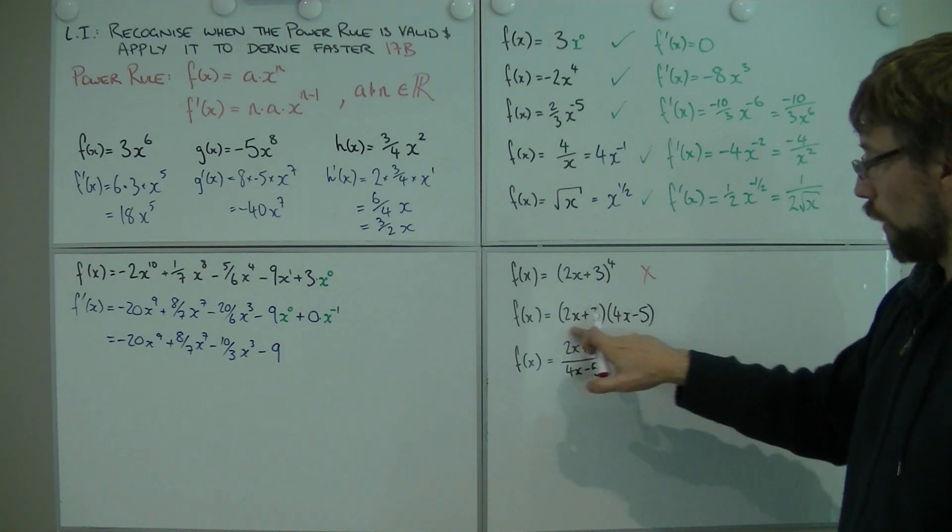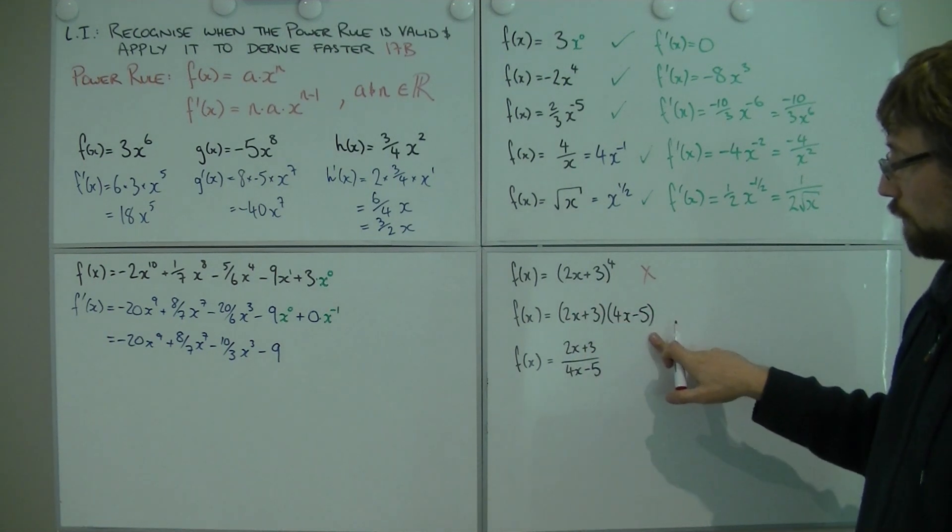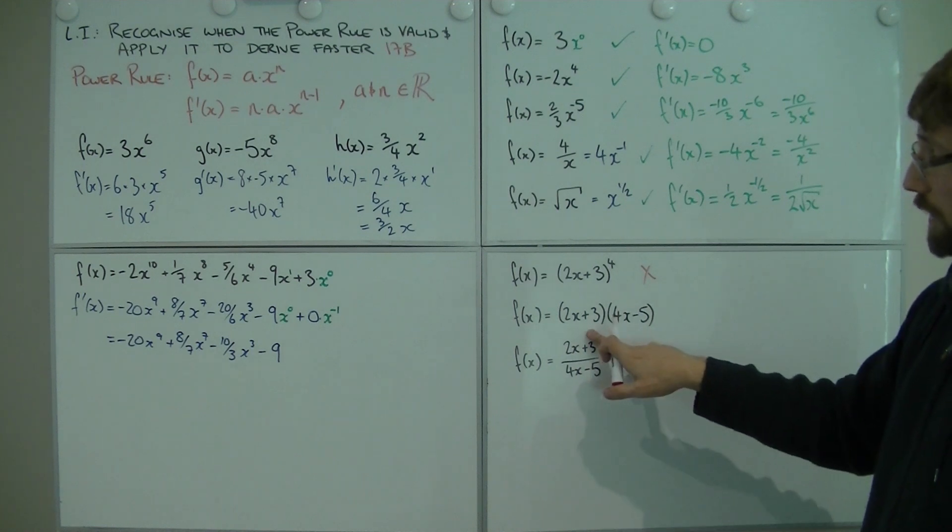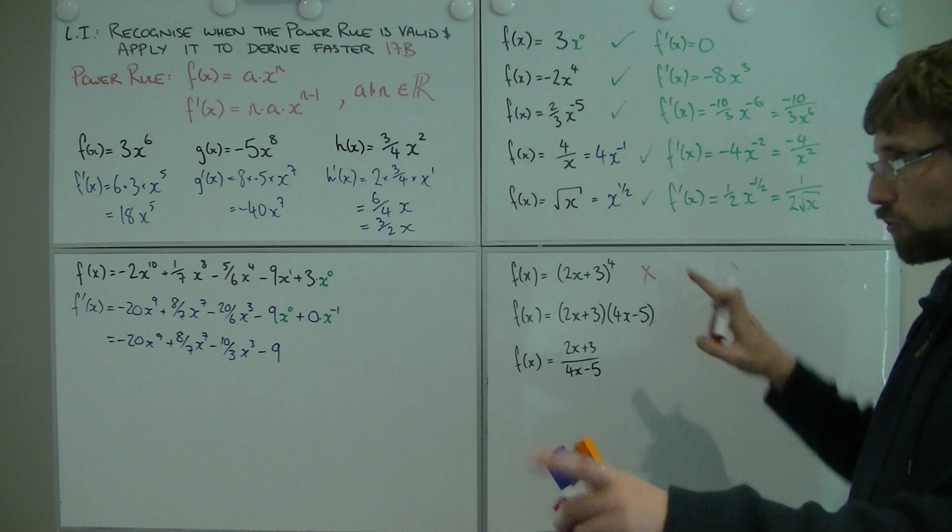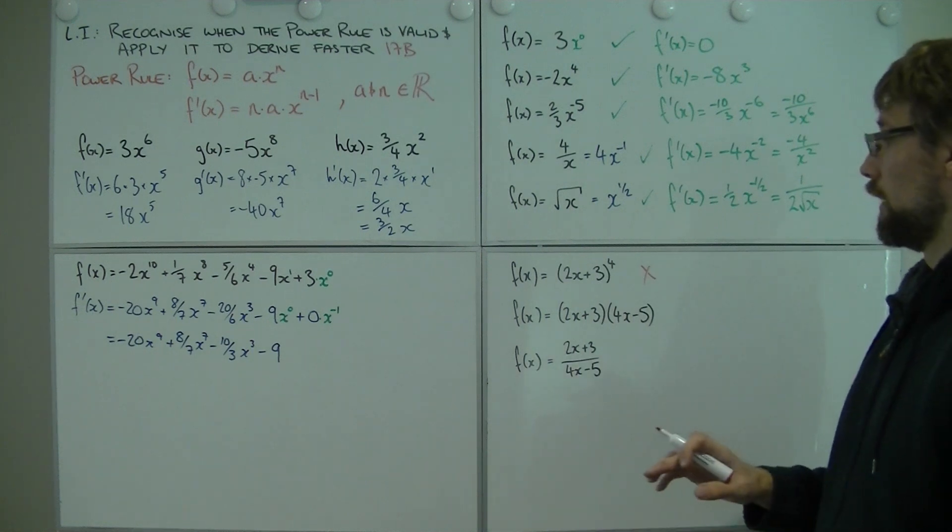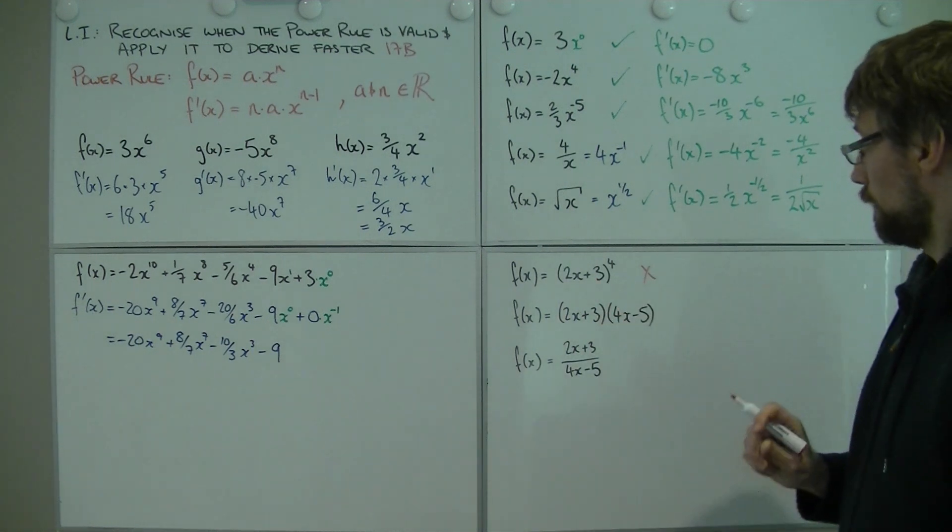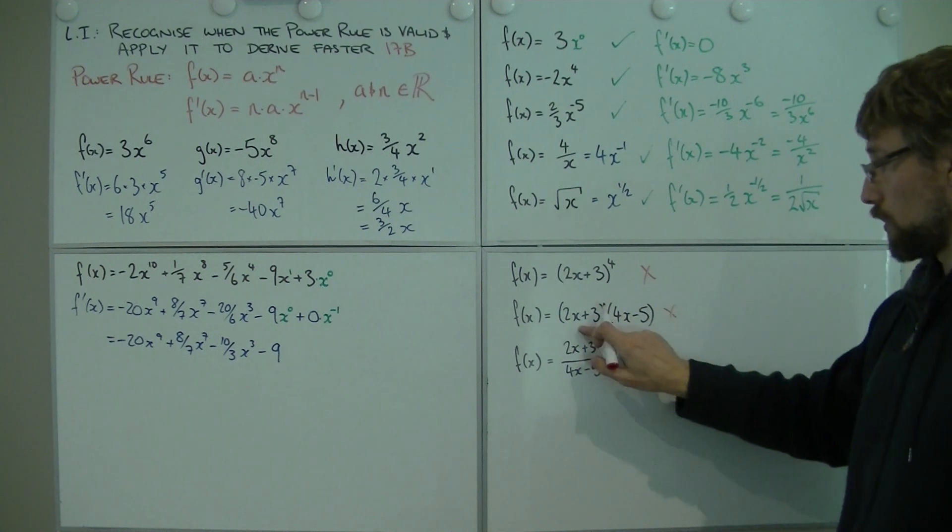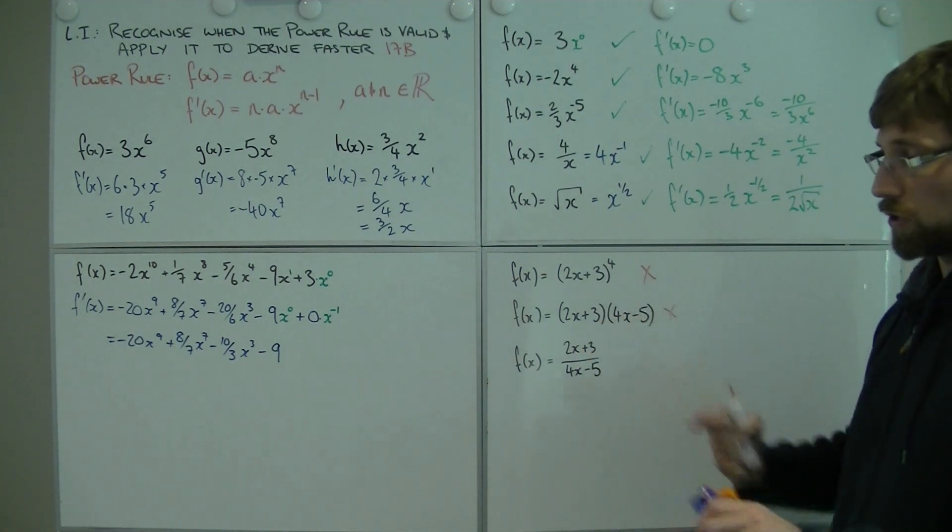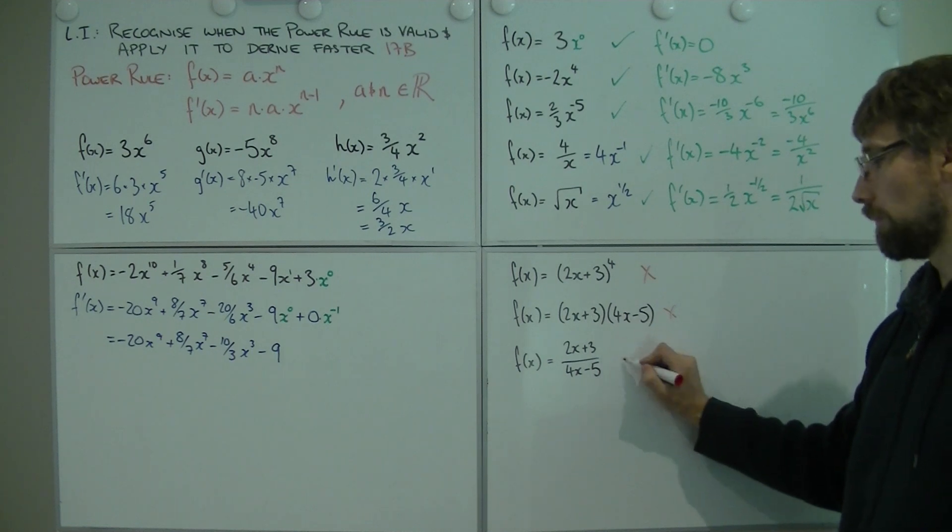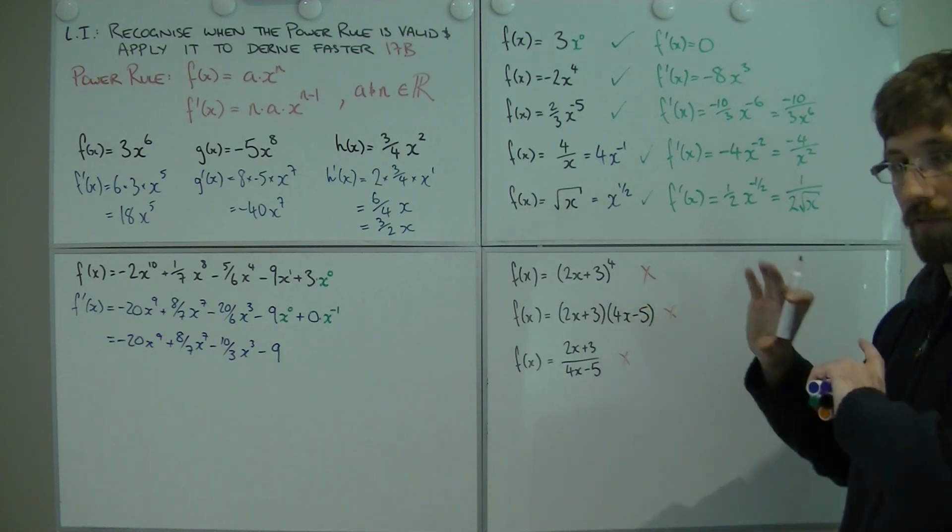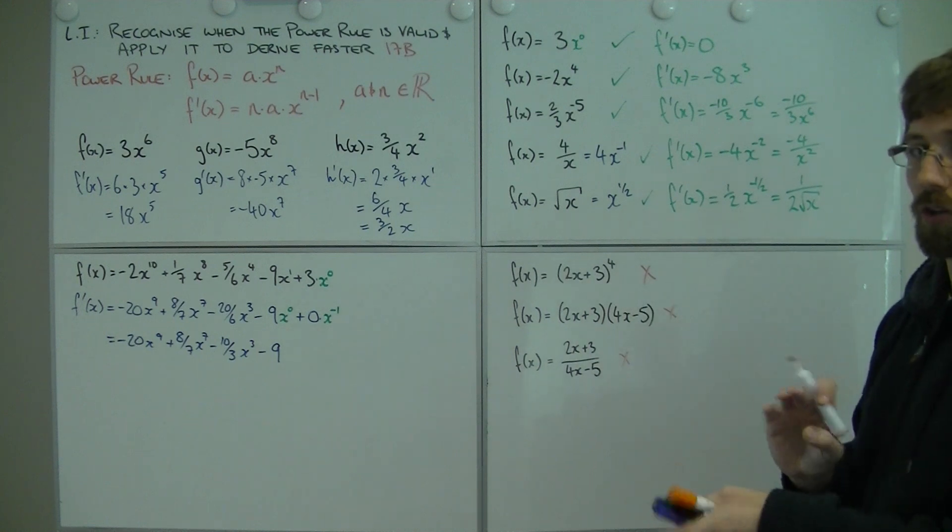What about this? I've got one function multiplied by another function. And it's tempting to think, I'll derive this one, and then separately derive this one, and then multiply those two results together. Turns out, no. Life ain't that easy. So no. If you've got a function multiplied by another function, don't touch it with power rule. What about a function divided by a function? Same story. If you have a function involving another function, you can't touch it.